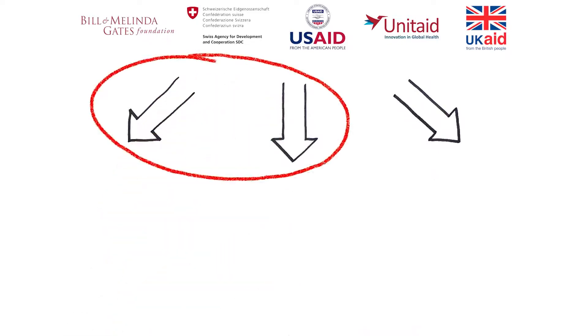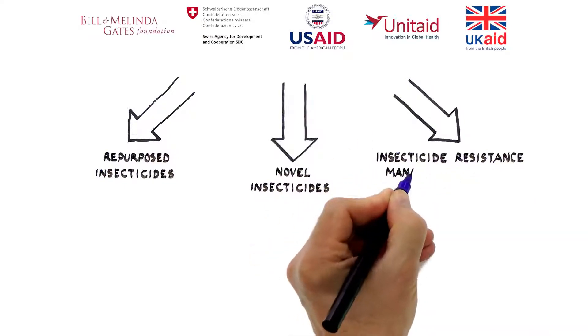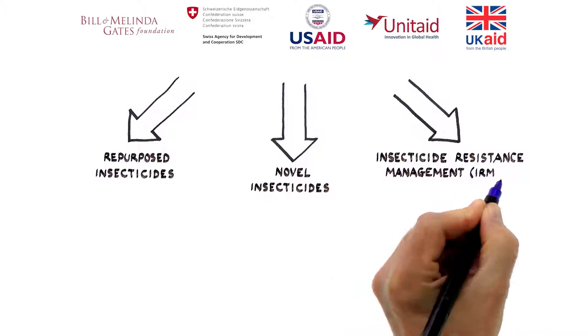The first two parts of this involve insecticide development: repurposed insecticides and novel insecticides. And the third part is deploying the insecticides as part of a robust resistance management, or IRM, strategy.